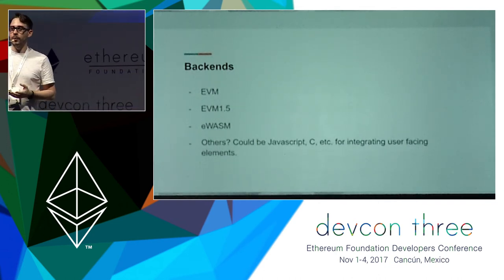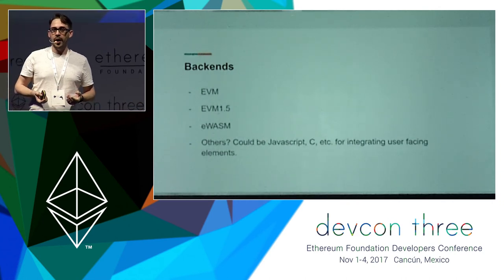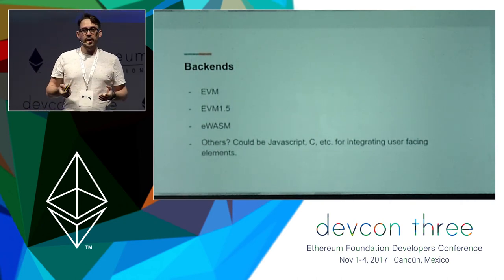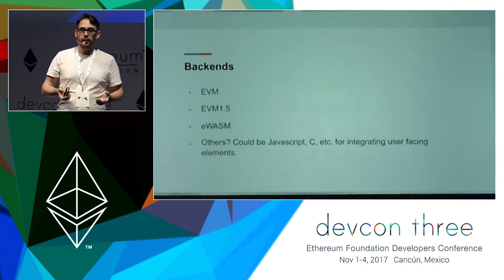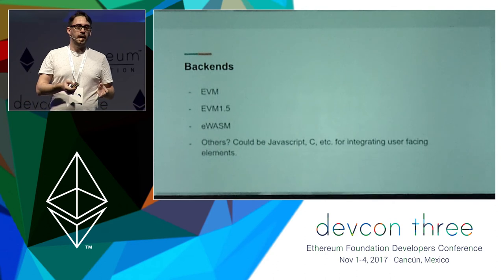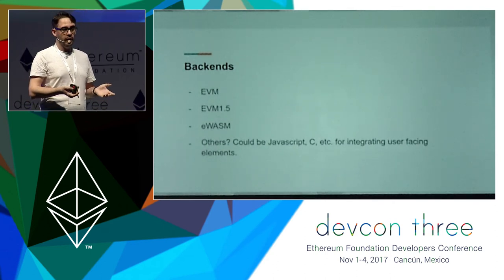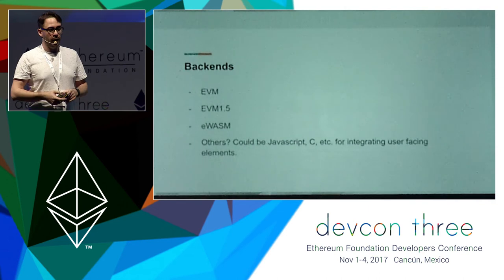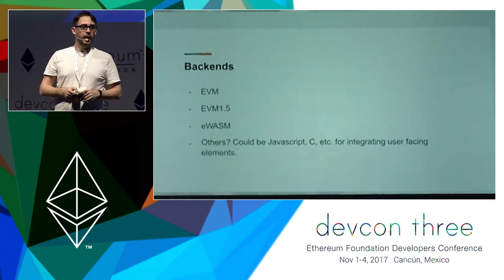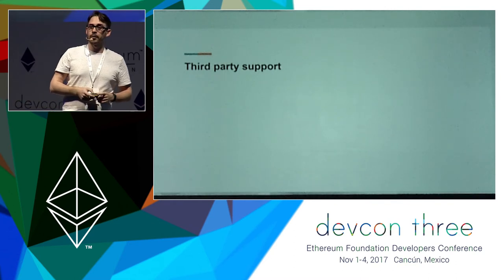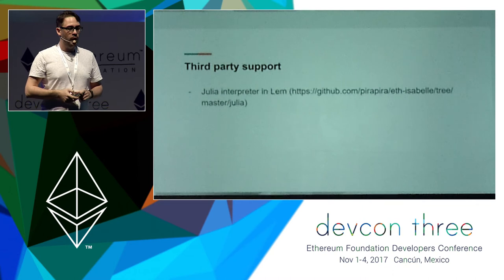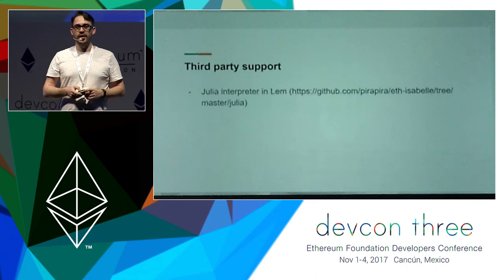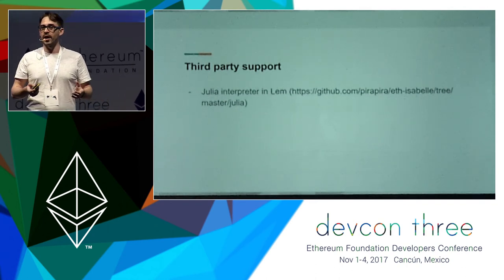Another possible backend is a JavaScript backend. The use case there would be someone writing more parts of their DApp in Solidity — right now you can only write the on-chain part in Solidity, but in the future you could write off-chain parts in Solidity and compile those to JavaScript. If anyone volunteers, I'm happy to help get that backend done. We already have a tiny bit of third-party support for Julia: there is a Julia interpreter in MLEM, written in less than a week, which probably shows that the language is quite simple to deal with.